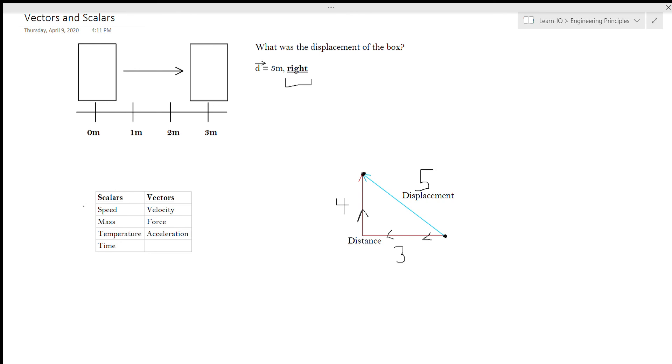So hopefully that helps you understand what the difference is between vectors and scalars. Just one last thing I want to point out before we leave is the little arrow on top of the D over here that you may have noticed. That's how we denote a vector whenever we're writing equations in physics. If it has an arrow over it, it'll typically be a vector. Whenever I'm writing equations for this course, I may not always remember to add the arrow just because it takes a whole bunch of extra time to add it.